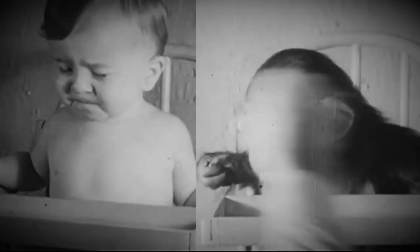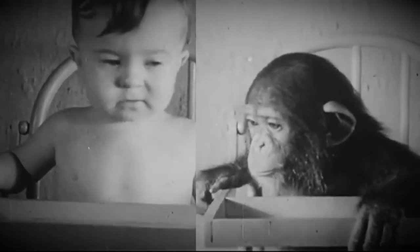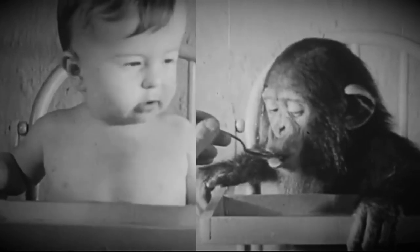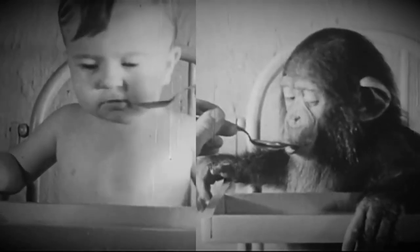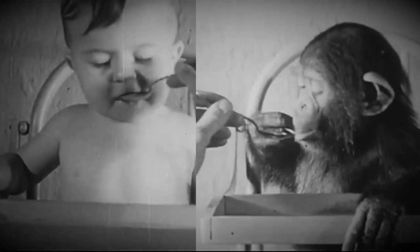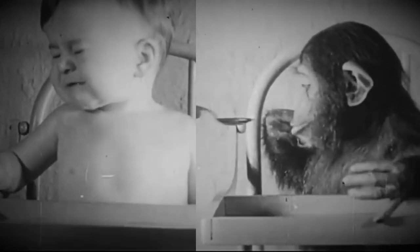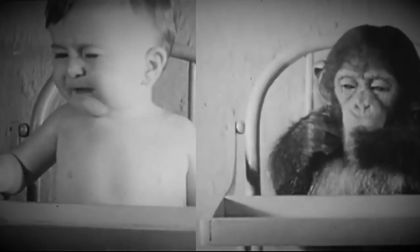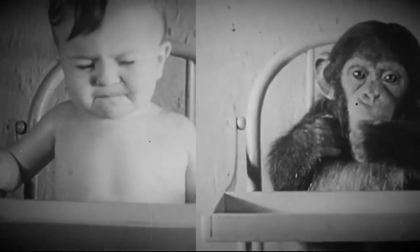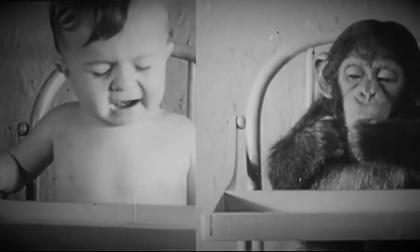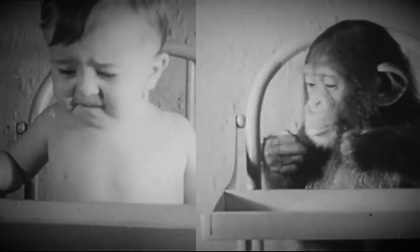Throughout the experiment, both of the subjects were given the opportunity to use a spoon. Like many other observations, the Kelloggs saw that Gua was way ahead in proficiency than Donald. By 13 months she was using the spoon for self-feeding with little mess, in contrast to Donald who had mastered the skill by around 18 months.